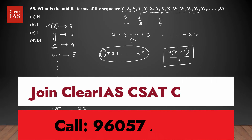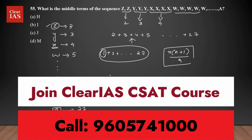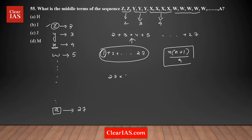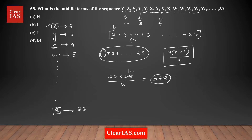With n = 27, the sum is 27 × 28 / 2 = 27 × 14 = 378. So 378 is the total sum of all natural numbers from 1 to 27. But since our sequence starts at 2, I subtract 1, giving 377. There are 377 terms in this sequence.